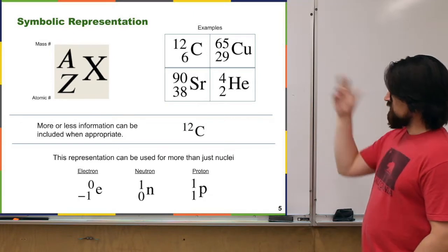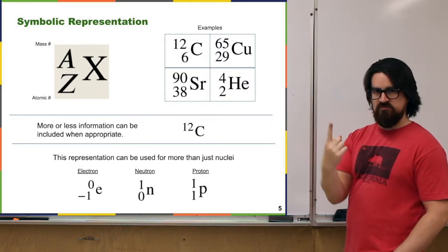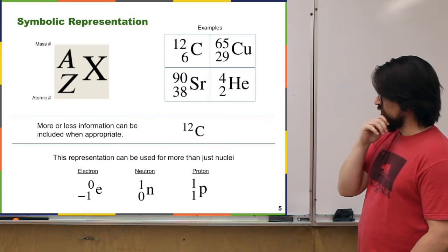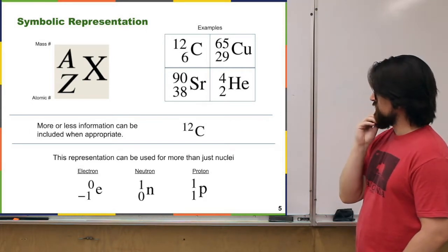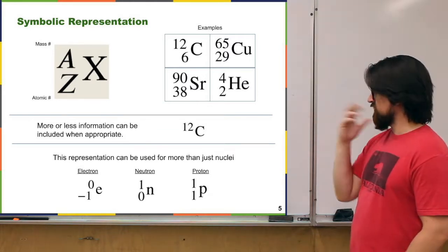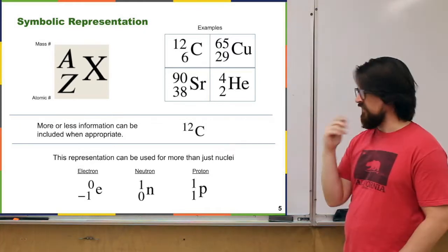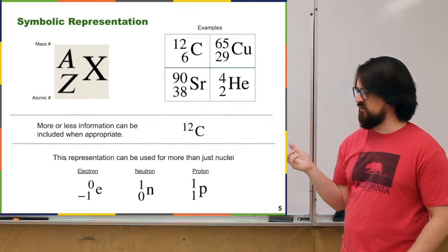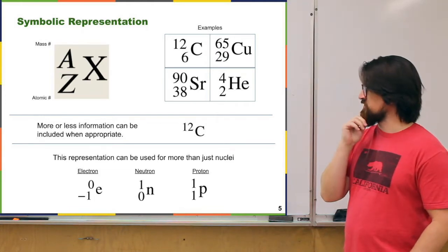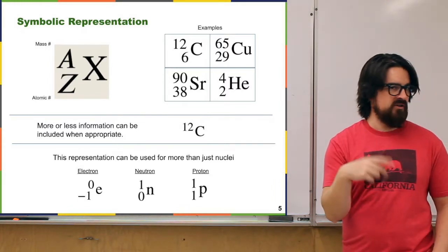For a proton, we write P with Z equals 1 and atomic mass equals 1, which is one nucleon. For a neutron, Z equals 0 — it has no charge — and atomic mass equals 1, one nucleon. For an electron, Z equals minus 1 for the minus one charge, and atomic mass equals 0 in this representation. The electron's mass is something like 2,000 times less than the proton and neutron, so we put zero for atomic mass.